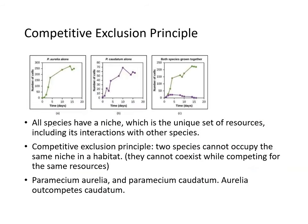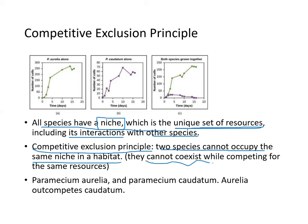All species have their own niche — a unique set of resources they use, including interactions with other species. The competitive exclusion principle states that two species cannot occupy the same niche in a habitat, because they constantly compete for the same resources. An example is Paramecium aurelia and Paramecium caudatum — when grown together, aurelia outcompetes caudatum.